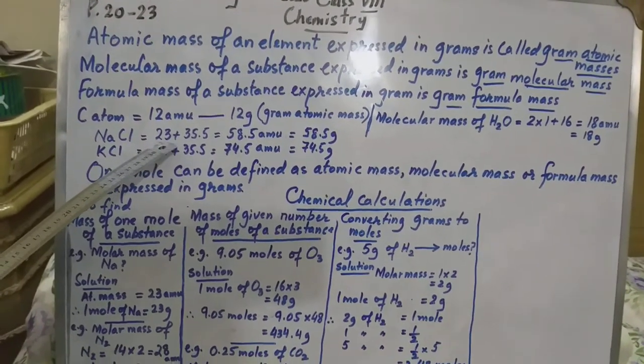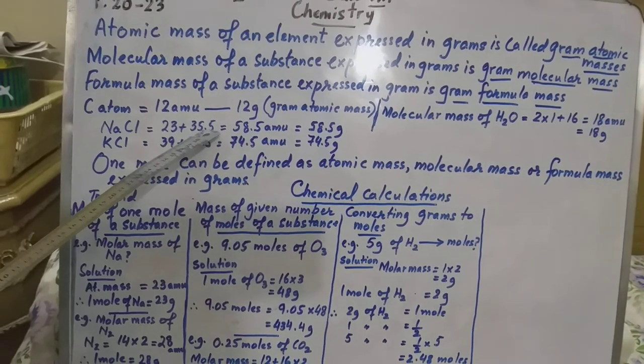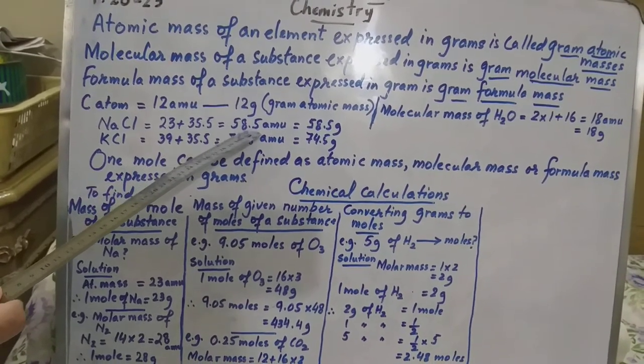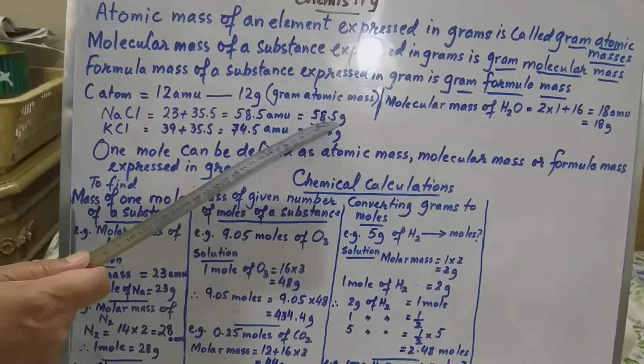Sodium mass is 23. Chlorine is 35.5. If we add them, it is 58.5. This is atomic mass unit. This is gram formula mass.